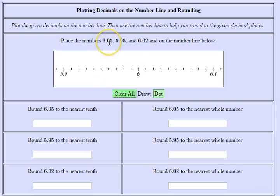Let's start by plotting now. We have 6.05. Well here's 6. There's one hundredth, two hundredths, three, four, five hundredths and I'll click there.